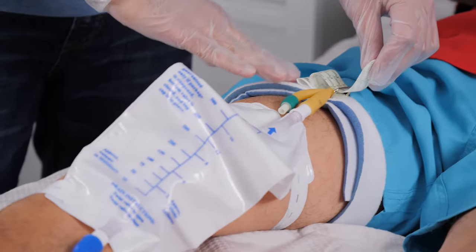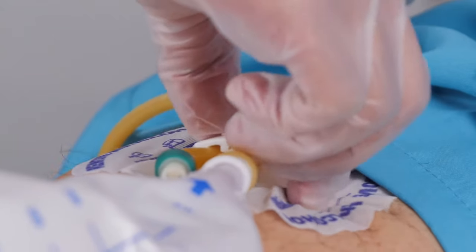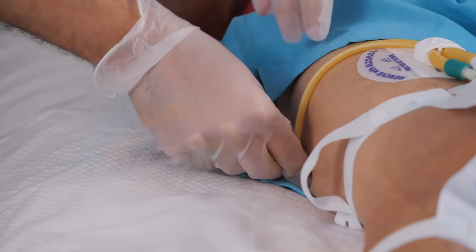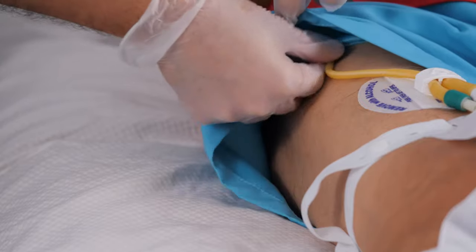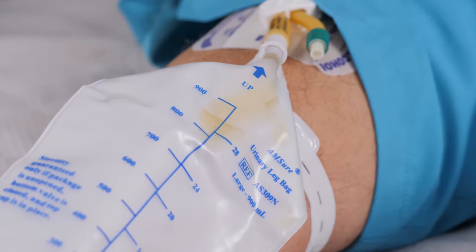There are a few ways to hold the tubing in place. Belts, stat locks, and anchors are some of the most popular. Whichever the person you're caring for uses, make sure the tubing isn't bent or kinked and that the urine is flowing into the bag again after you change it.